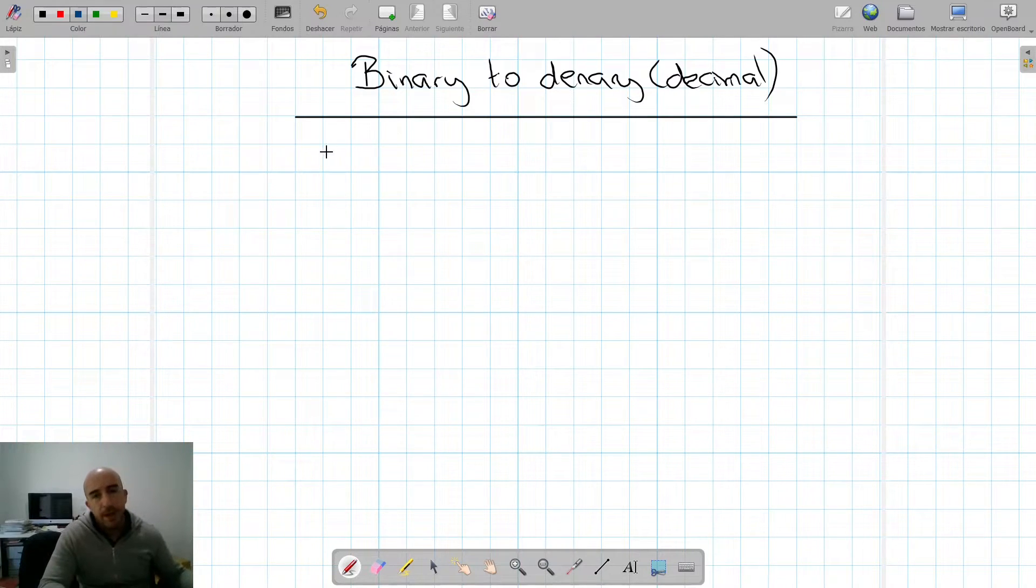The first thing we're going to do is to order the positions of each bit and how much they cost. So what are we going to do? We're going to write down the base of the original system. In this case, it's a binary system, which is base 2. And their positions from right to left, starting with the 0.